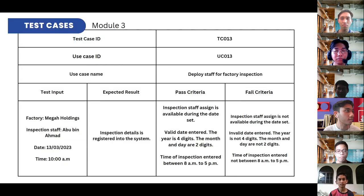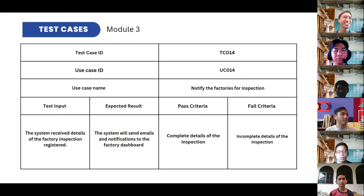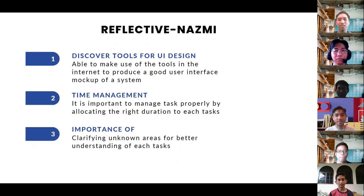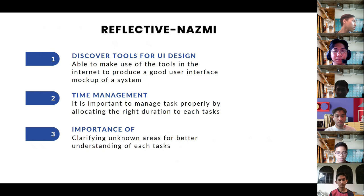For the test cases: the first is the deployment of staff for factory inspection, showing the test input required. The second is to notify factories for inspection. For my reflection: first, I discovered tools for UI design and made use of internet tools to produce a good UI system. Next is time management — it is important to allocate the right duration for each task. Finally, I learned the importance of clarifying unknown areas for better understanding of each task.